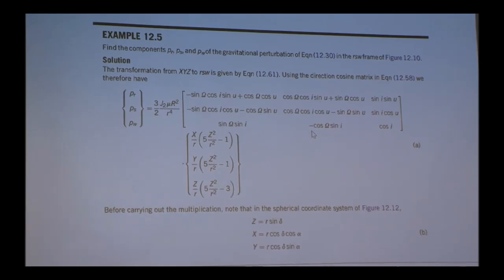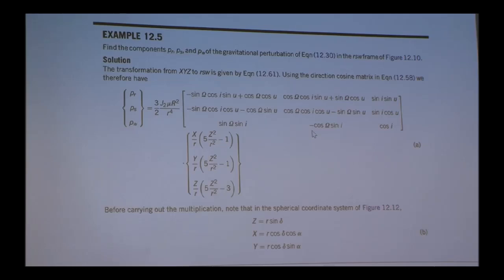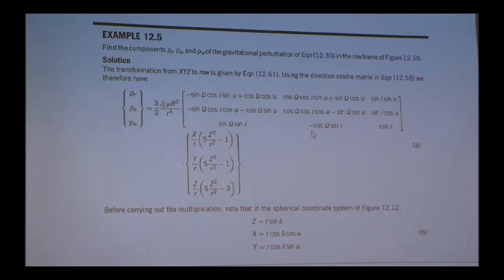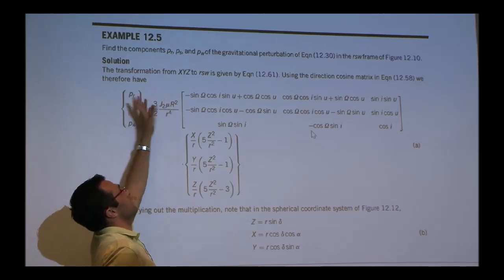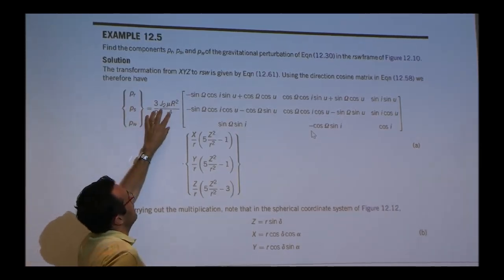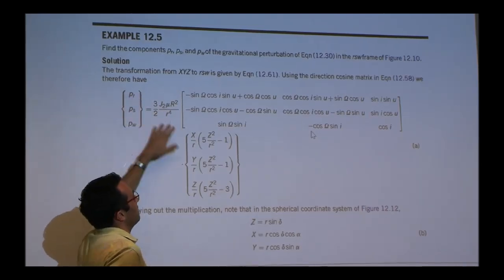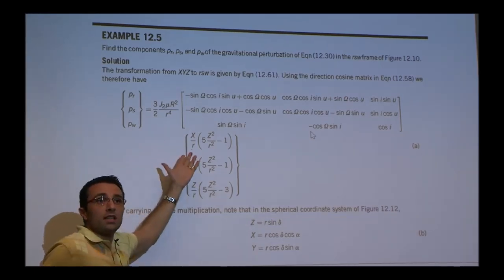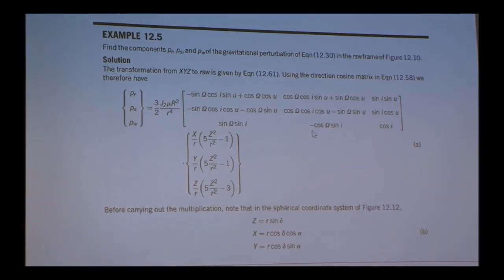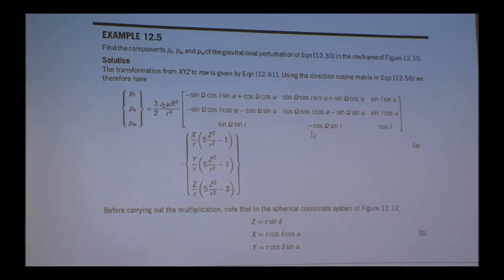As we know, the Gauss Variational Equations take the projection of perturbations in the radial, normal to the orbit, and tangential direction. So what you would have to do if you want to use them for J2 is take something that you know in ECI — this vector — and project it into LVLH, so that you can get PS due to J2, PR, and PW that go into those Gauss Variational Equations.